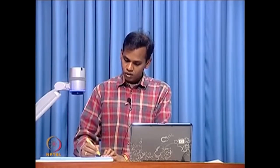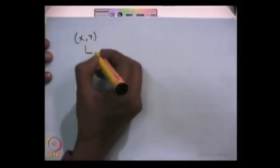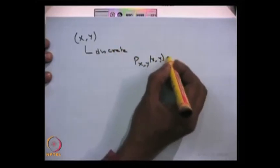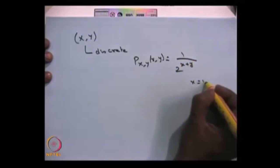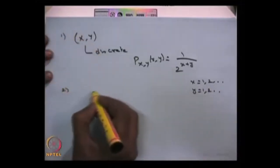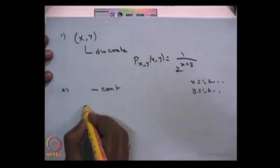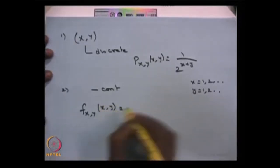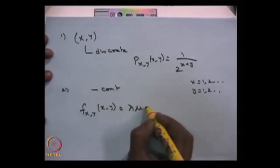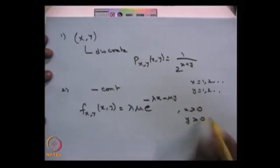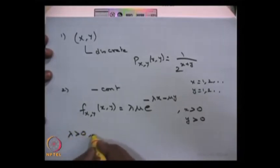Before moving to the next concept, let me give a few examples. For the discrete case, an example of a joint probability mass function is 1 divided by 2^(x+y), where x = 1, 2, ... and y = 1, 2, ... For the continuous case, a simple example of a joint probability density function is f(x, y) = lambda times mu times e^(−lambda*x − mu*y), where x > 0, y > 0, lambda > 0, and mu > 0.